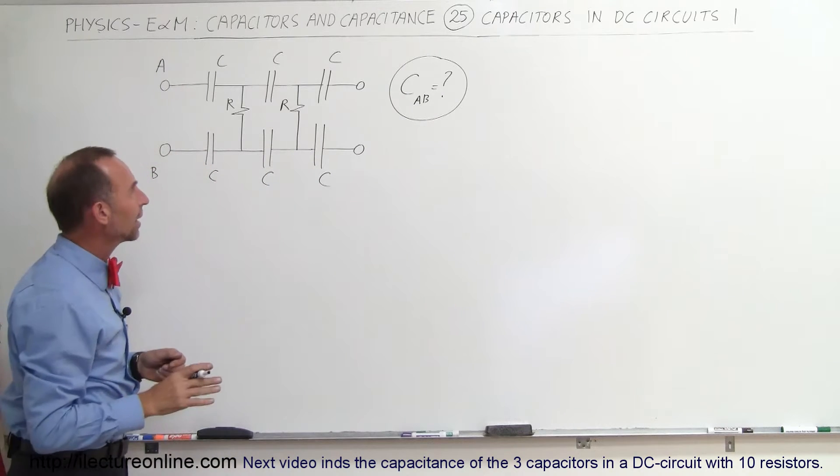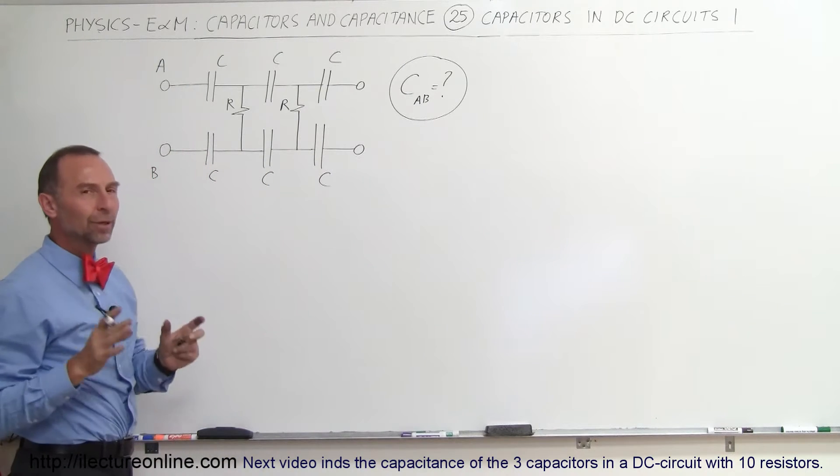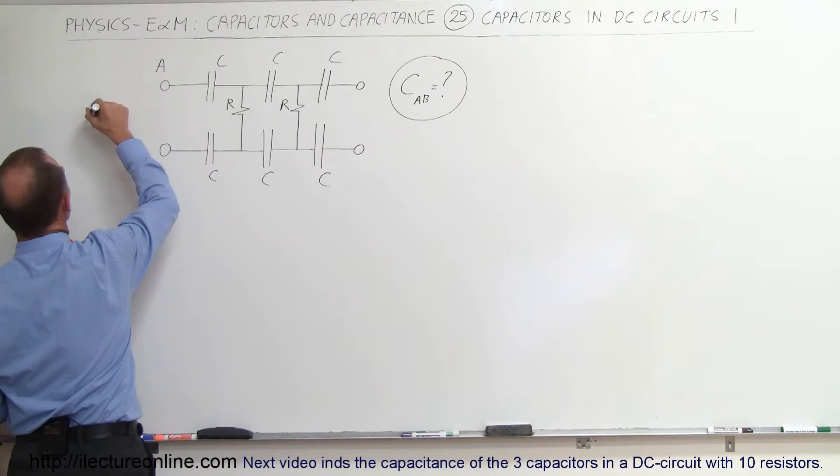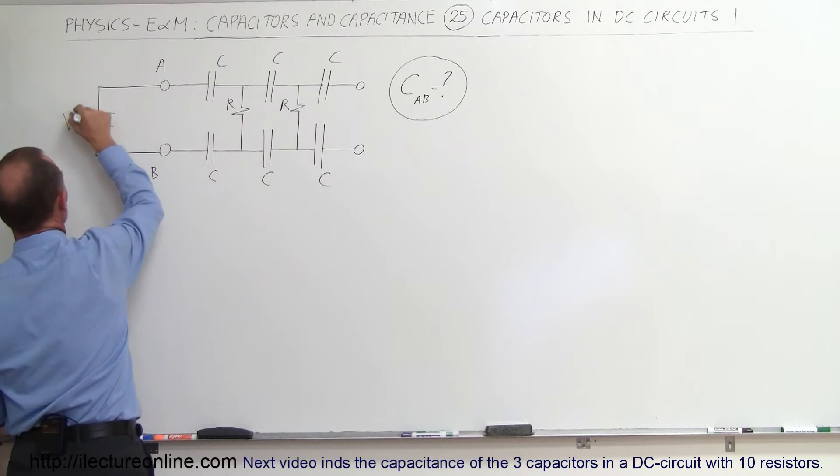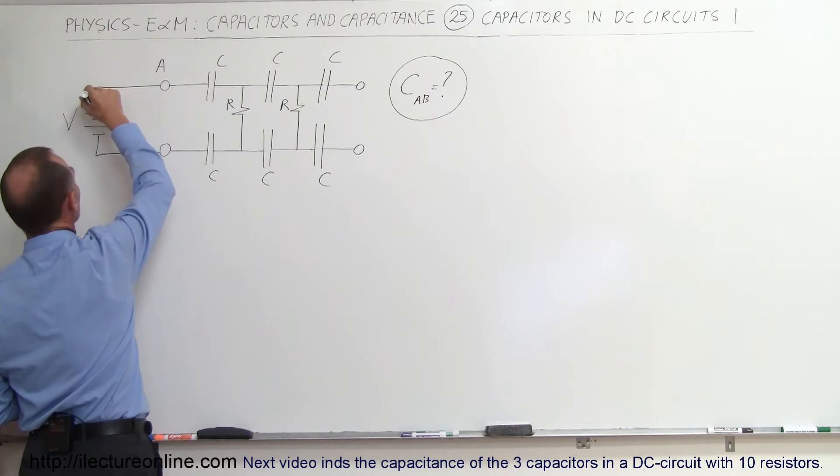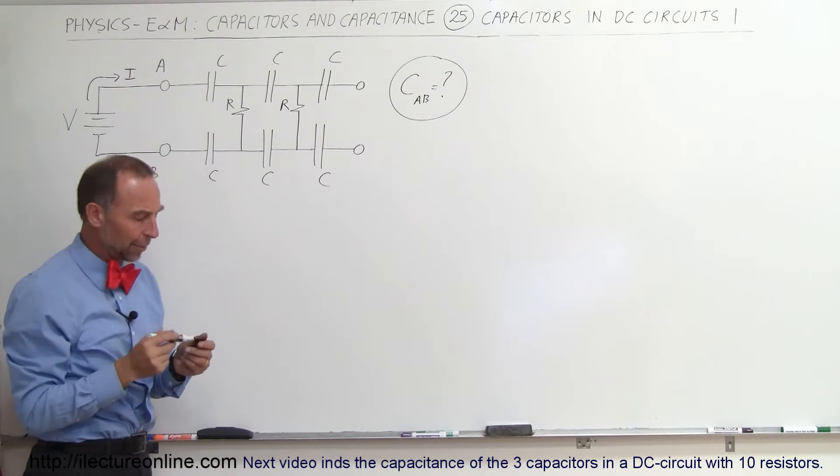One way to think about it is to see what would happen if we apply a voltage across the terminal. So let's say that we have a battery and we connect it to A and B like this and have a certain potential difference across it, which means that current would flow down the circuit and into the circuit here and let's see what would happen.